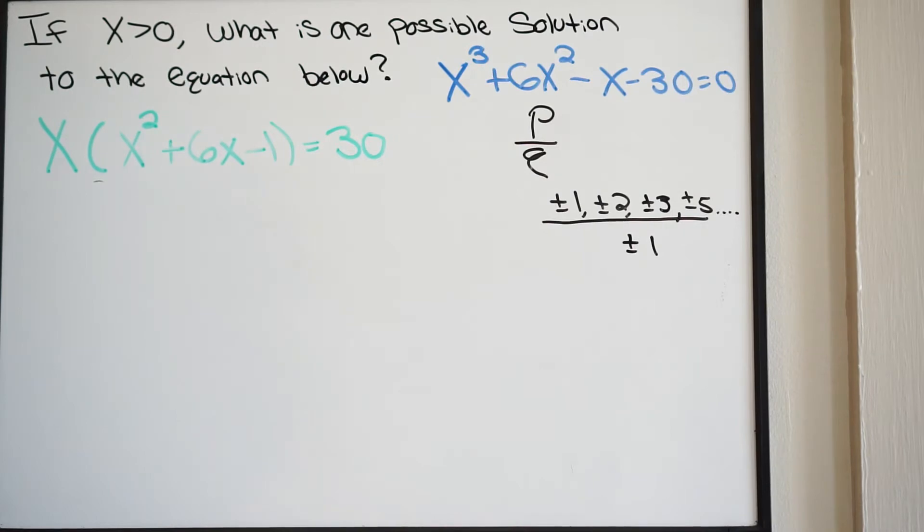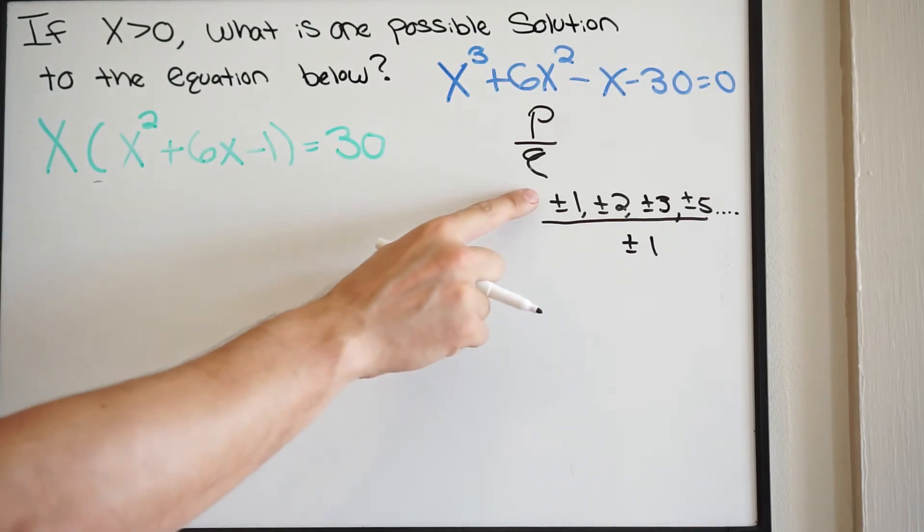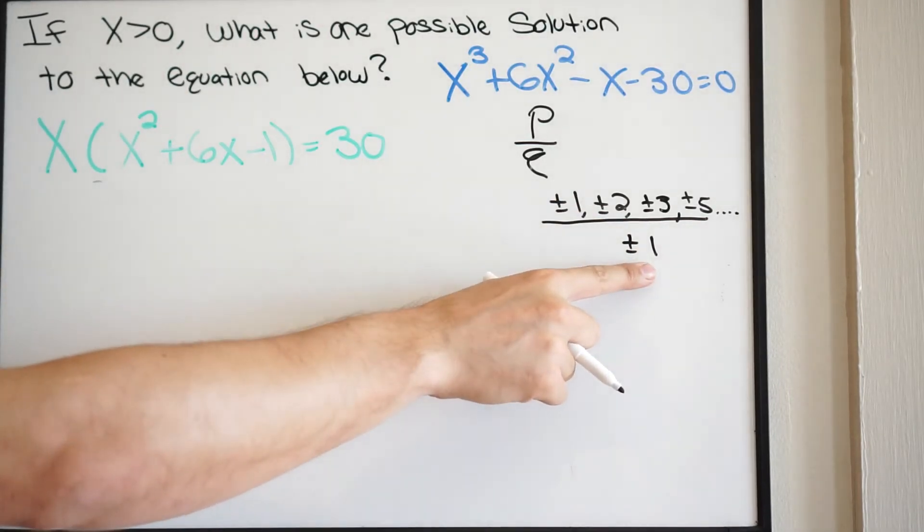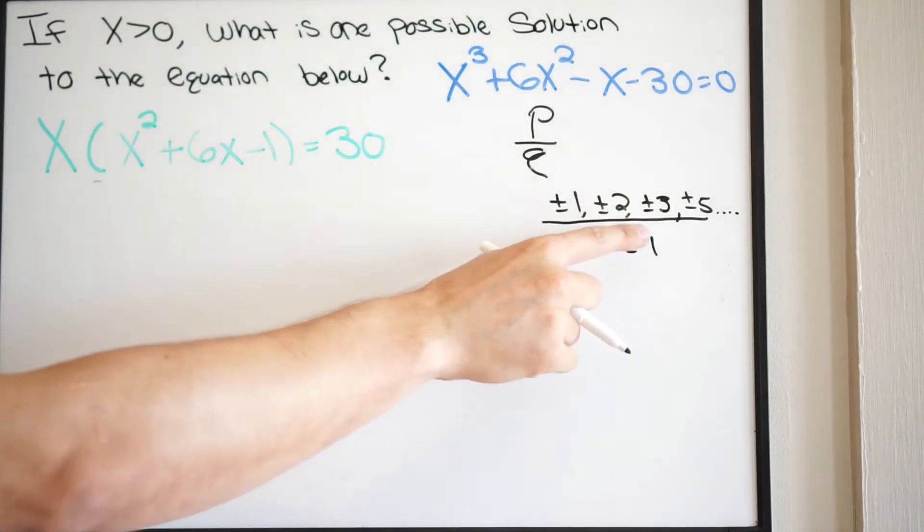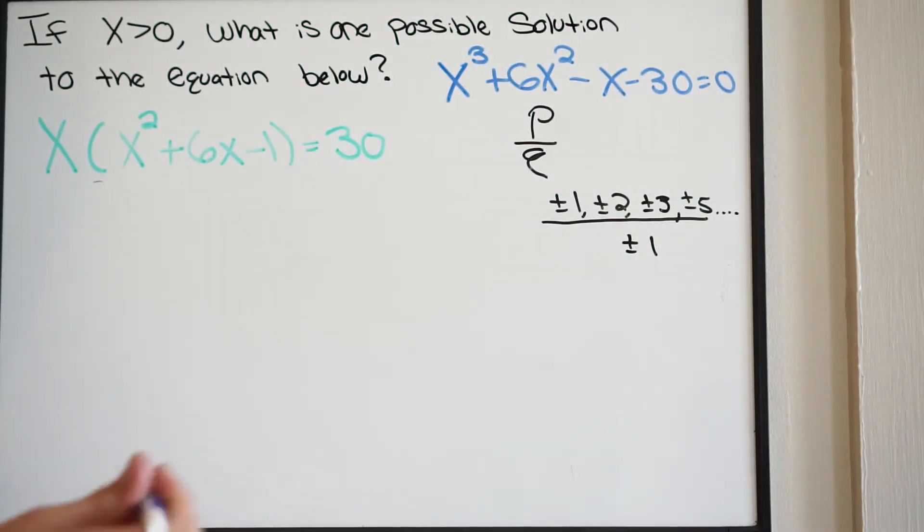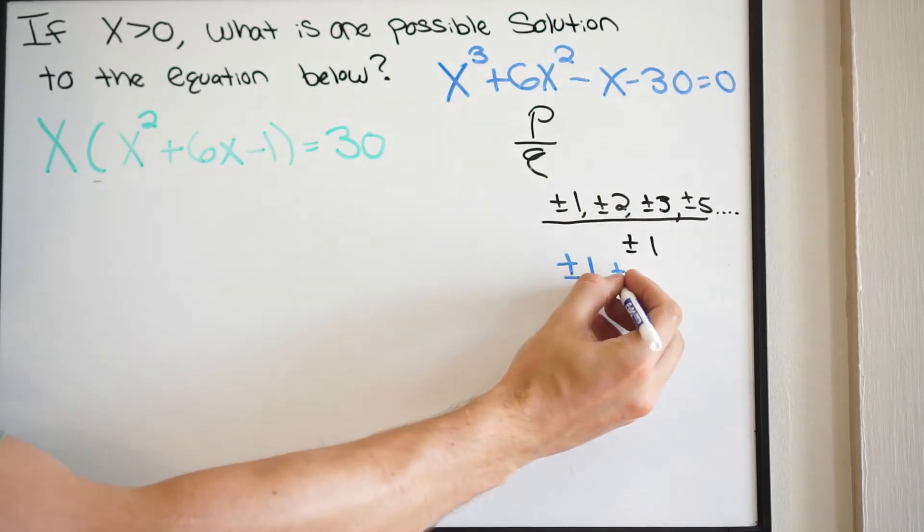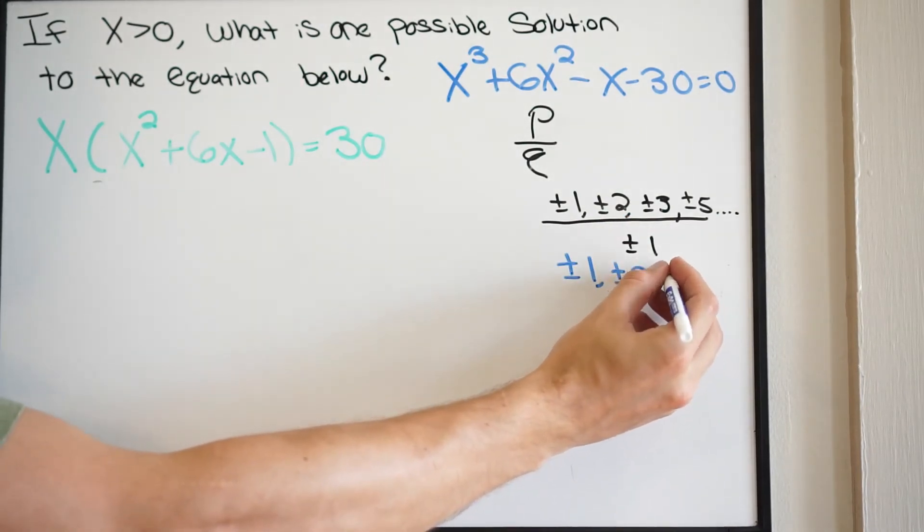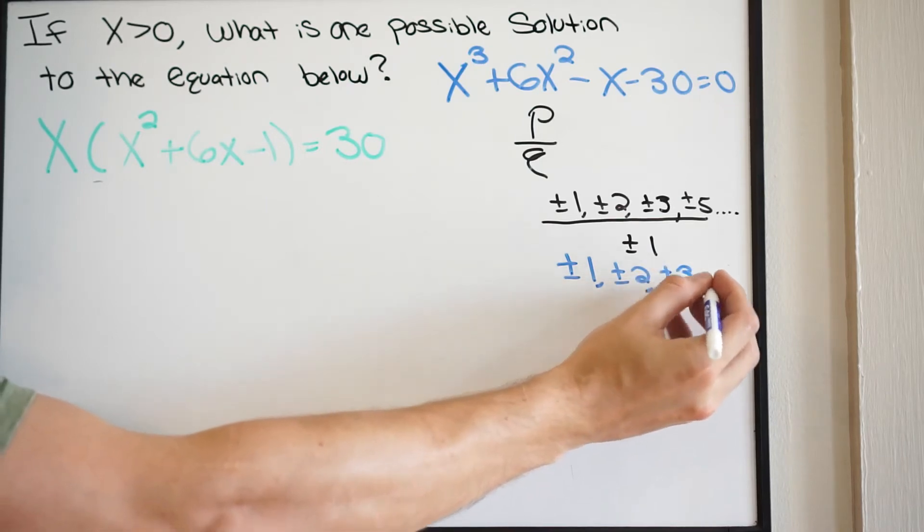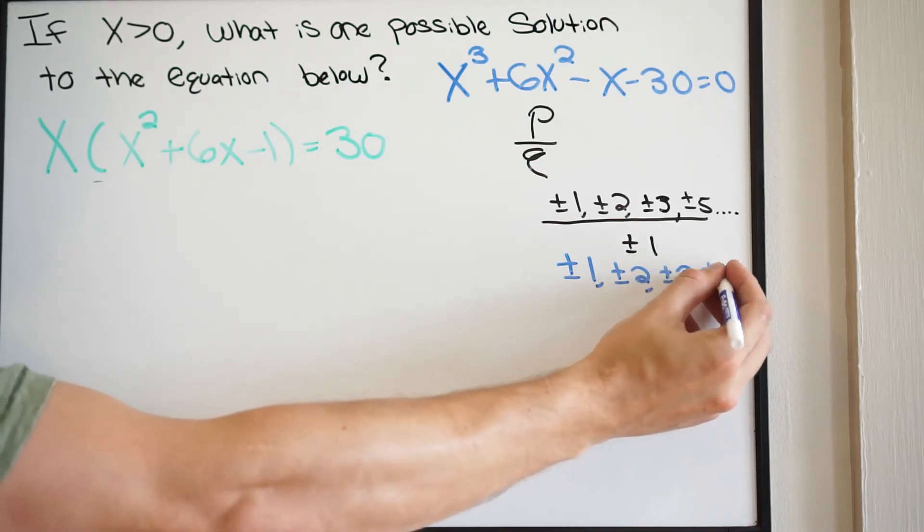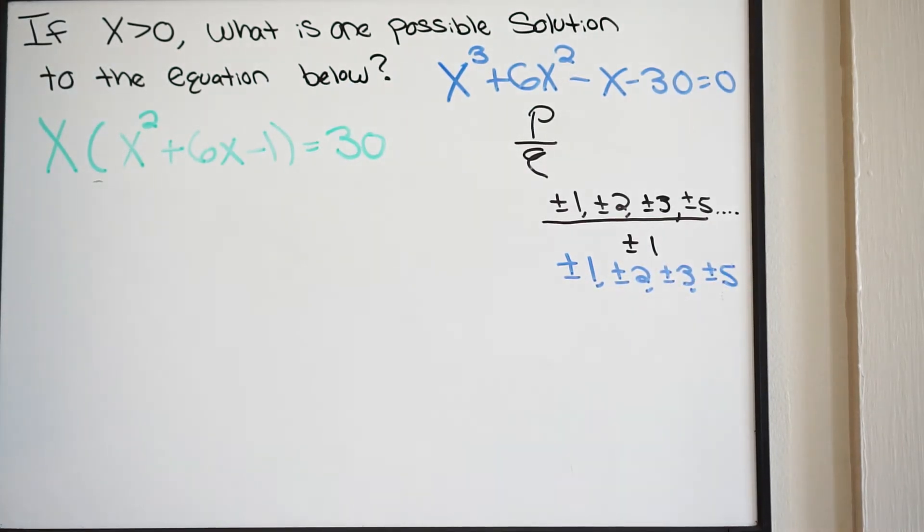Doing this, we can have the following possible rational roots. All you're going to do is simply just do division here. You can do plus or minus 1 divided by plus or minus 1, plus or minus 2 divided by plus or minus 1. So we're going to have plus or minus 1, plus or minus 2, plus or minus 3, and plus or minus 5. If we need more, we can always go back and get more.